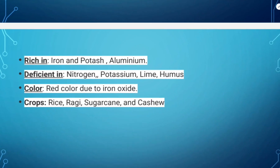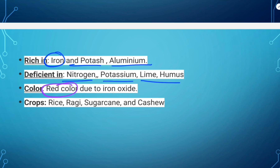Laterite soil is rich in iron, potassium and aluminum, but deficient in nitrogen, potassium, lime and humus. Its color is red due to iron oxide. Crops grown here include rice, ragi, sugarcane and cashew.